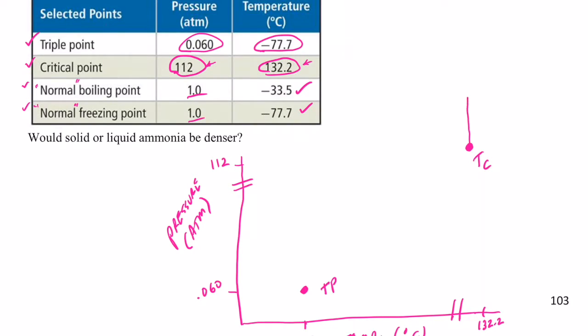Now that line is going to go vertical because no amount of pressure can liquefy the gas once I exceed that critical temperature. Now remember normal is one atmosphere so I'm going to put that right there and it looks like my normal boiling point is negative 33.5 at one atmosphere. We'll put a point right there. We're going to call that T sub B. That's my normal boiling point.